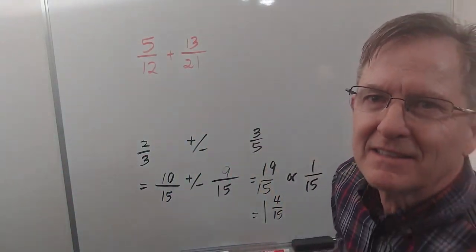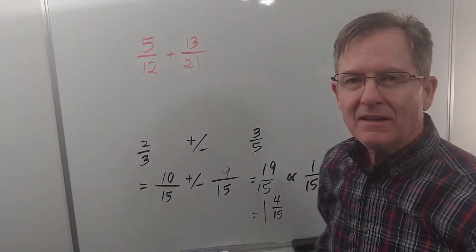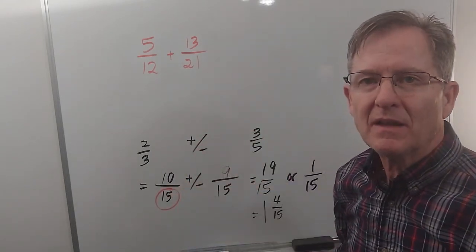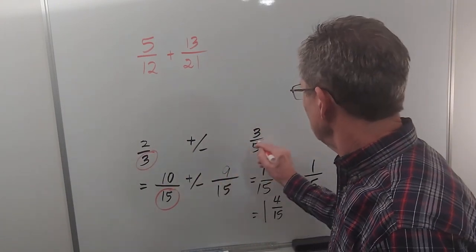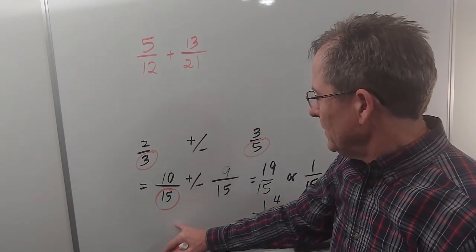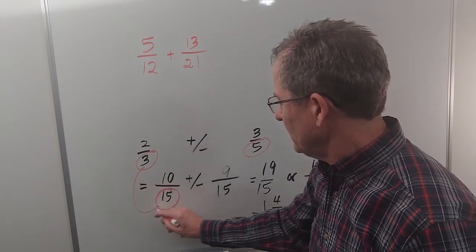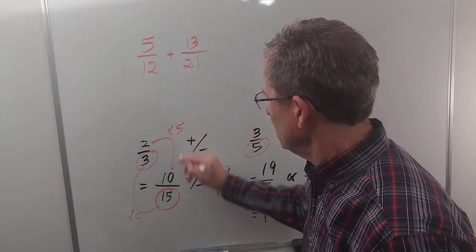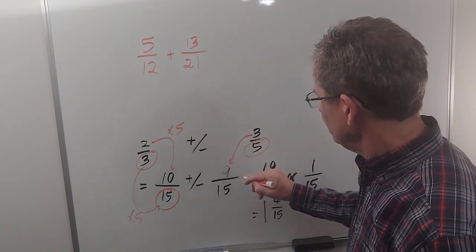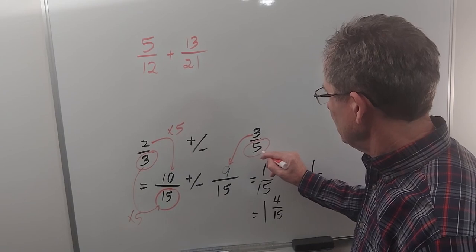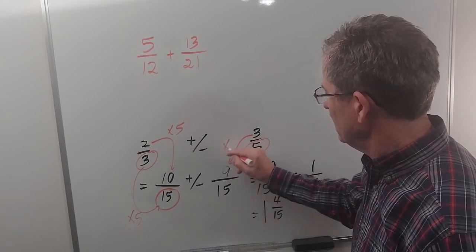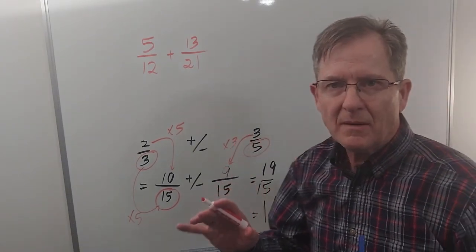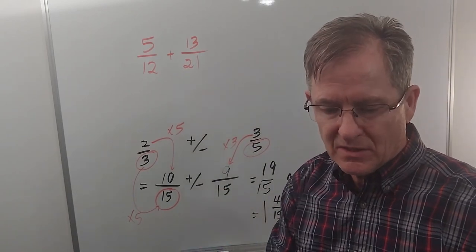All right, back to the last lesson where we are adding and subtracting fractions. I didn't mention that to get a common denominator, in this case it was 15, you can just multiply two denominators. 3 times 5 is 15, and then if you multiply 3 times 5 to get the 15, you have to multiply 2 times 5 to get the 10. Likewise here you multiply 3 times 3 because I had to multiply 5 times 3 to get 15. So you don't have to cut up the pizza pies into equal slices; you can just do it mathematically.